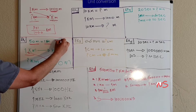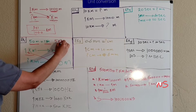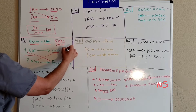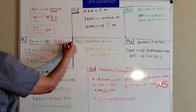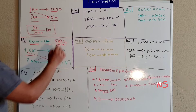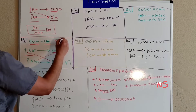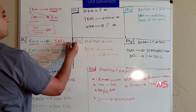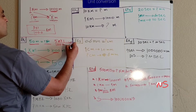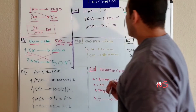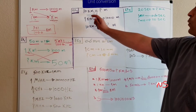50 times one over one thousand — the result will be equal to 5 over 100, so the zeros cancel and we'll have 0.05 kilometers.